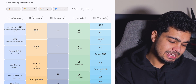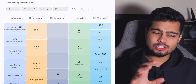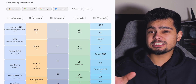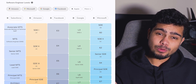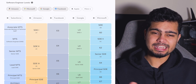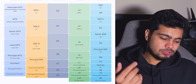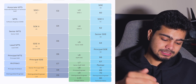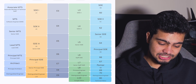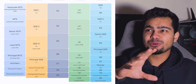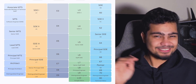Senior SG-3 overlaps with Microsoft level 65, which is principal engineer. So if you are a principal engineer at Microsoft and apply to Amazon, you can get the principal engineer role there too, though it is not guaranteed. Above SG-3 and principal, you have partner, distinguished engineer, and technical fellow. Distinguished engineer and technical fellow are very rare — in companies like Microsoft, the number is in the single or double digits.